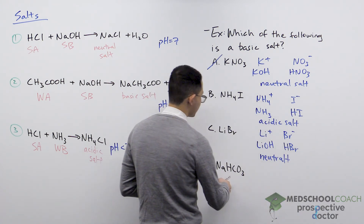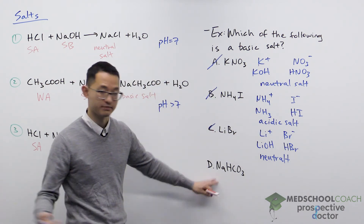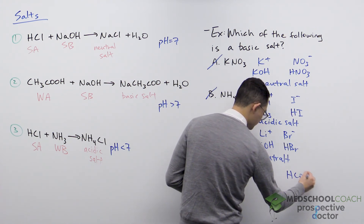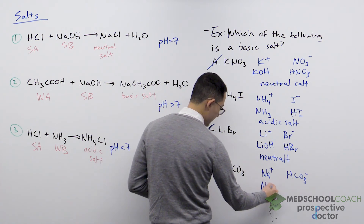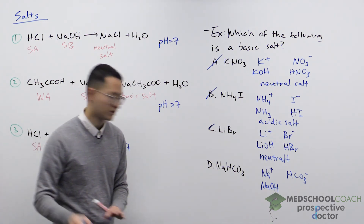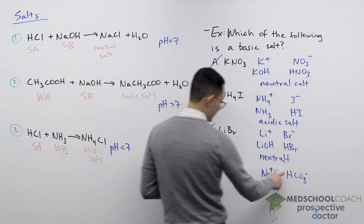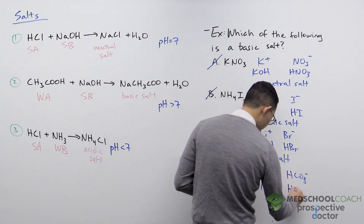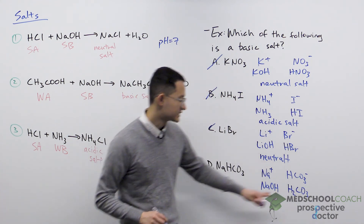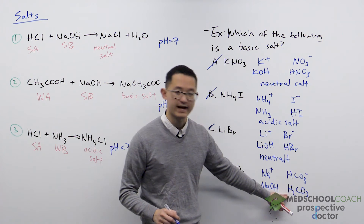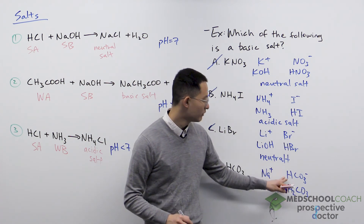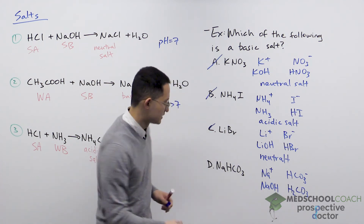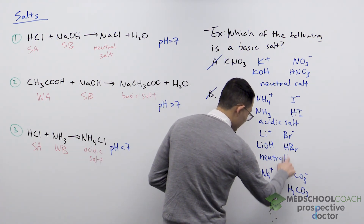Finally, option D is NaHCO3, made of Na+ and HCO3−. Na+ is the conjugate acid of sodium hydroxide, which is definitely a strong base, so Na+ has no acidic properties. HCO3− has a negative charge, making it the conjugate base of carbonic acid, H2CO3. H2CO3 is not one of our six strong acids, so it is a weak acid. The conjugate base of a weak acid is a weak base, so this salt has no acidic properties but is weakly basic. This is the basic salt we were looking for — D is correct.